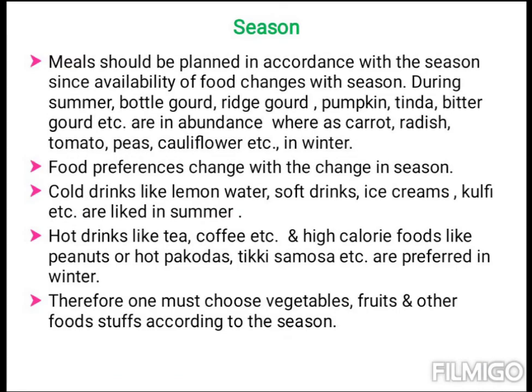The next factor to be considered is season. Meals should be planned in accordance with the season since availability of food changes with the season. During summer, bottle gourd, ridge gourd, pumpkin, tinda, and bitter gourd are in abundance, whereas carrot, radish, tomato, peas, and cauliflower are available in winter. Food preferences also change — cold drinks like lemon water, soft drinks, and ice creams are preferred in summer, while hot drinks like tea and coffee, and high-caloric foods like peanuts, pakoras, tikki, and samosa are preferred in winter. Therefore, one must choose vegetables, fruits, and other foodstuffs according to the season.